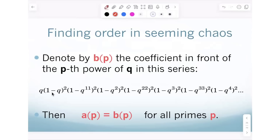You just say 1 minus Q to the i, where i is equal to 1, and then repeat for i plus 1. So you get Q squared, Q squared squared, and each time square it. Then do the same with Q to the 11 instead of Q — so Q to the 11, Q to the 22, Q to the 33. It's easy to program.